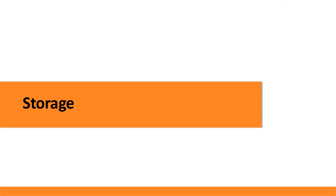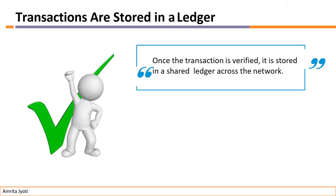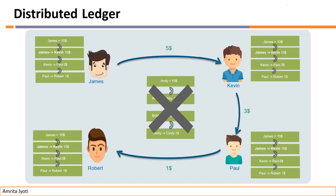Now the concept is storage. Once the transaction is verified, it will be stored in a block form and added to the existing blockchain. Once the transaction is verified, it is stored in a shared ledger across the blockchain network. Here you can see the concept of a distributed ledger — all nodes involved in the complete blockchain network will have the same ledger.